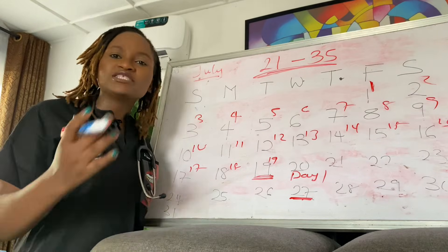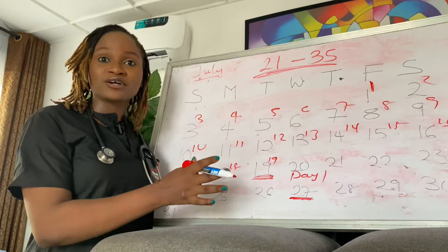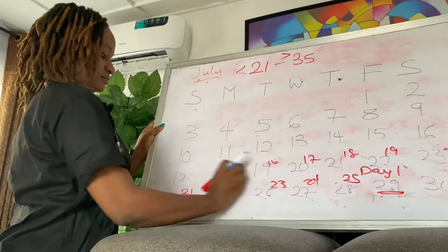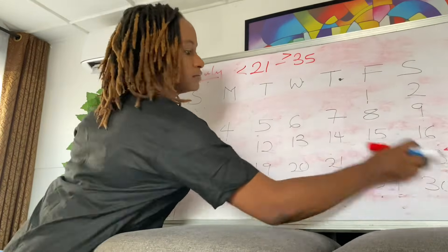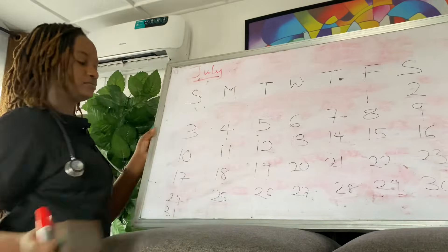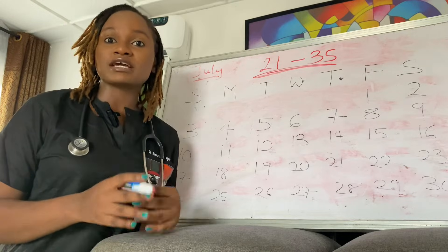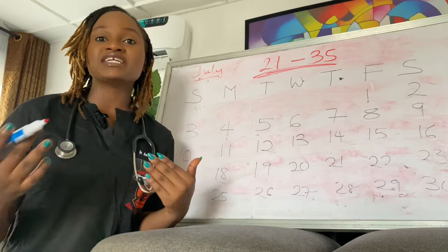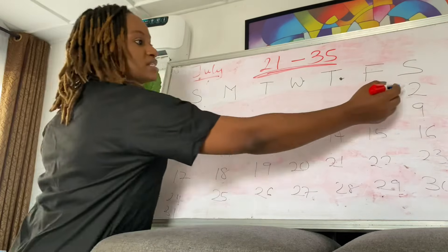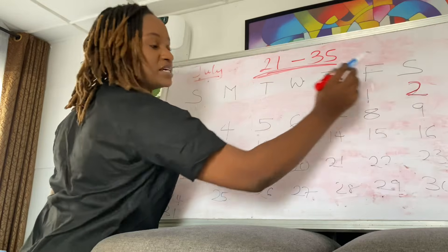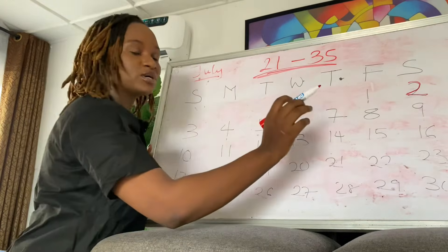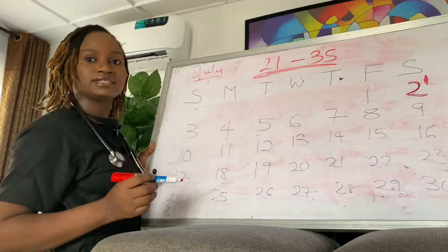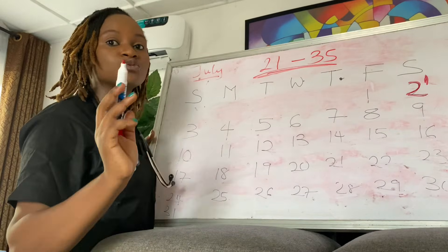So now, how do you know when to expect your period? It's the same calculation really. If your last menstrual period was on the 2nd of July and you have a 25-day cycle, this is when you should be expecting your next period. The 2nd of July is your day one, so you want to count to 25 days.